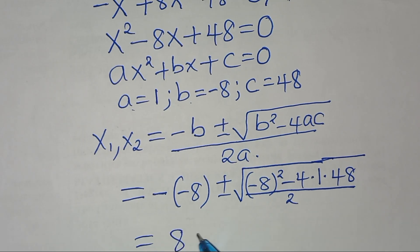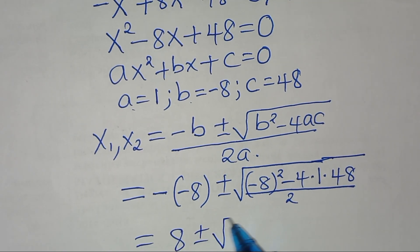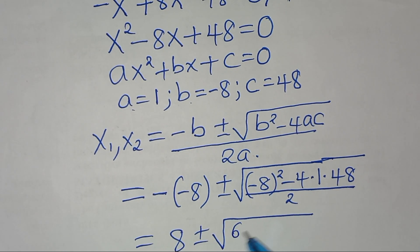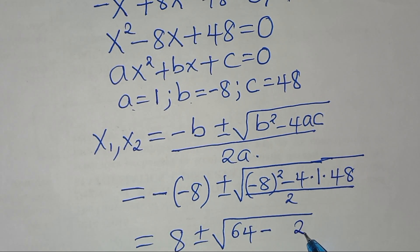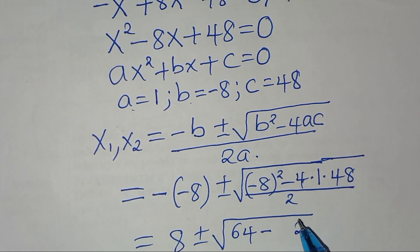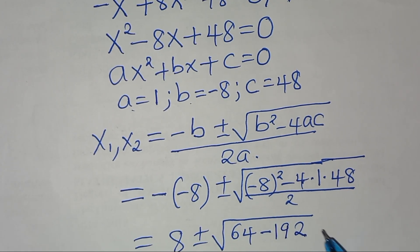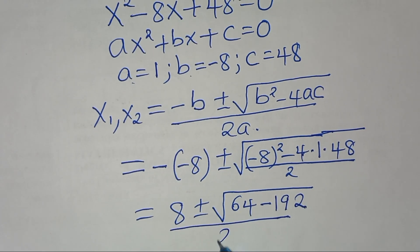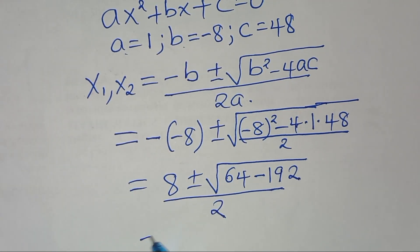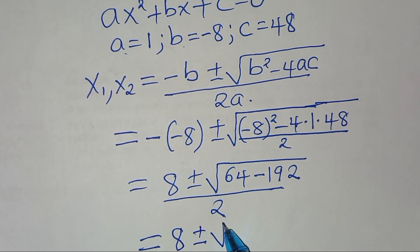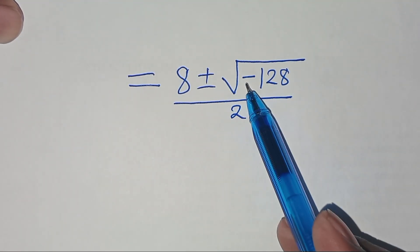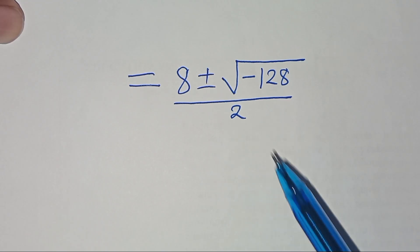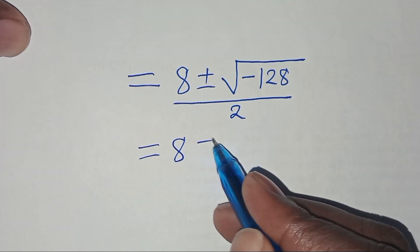This gives us 8 plus or minus the square root of (64 minus 192), divided by 2. Since 4 times 1 times 48 equals 192, we get 8 plus or minus the square root of minus 128, divided by 2.